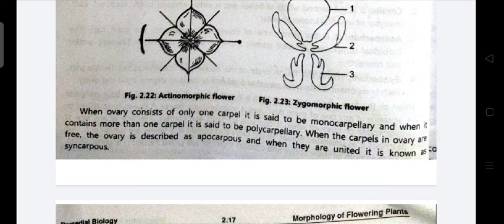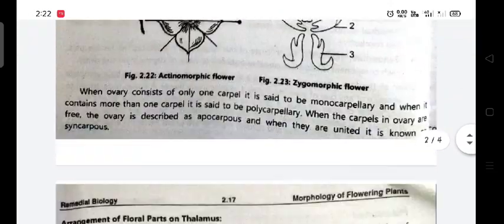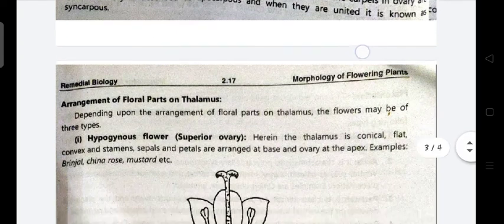When the ovary consists of only one carpel, it is called monocarpellary. When it has more than one carpel, it is called polycarpellary. When the carpels in the ovary are free from each other, it is called apocarpous. When they are united, it is called syncarpous.